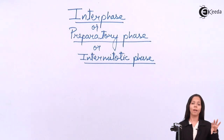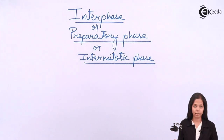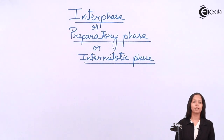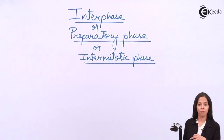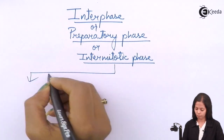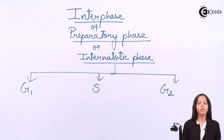So when the M phase is completed, interphase occurs in between, and then comes another M phase. That is why it is also called intermitotic phase. Interphase is divided into three sub-phases: G1, S, and G2 phase.